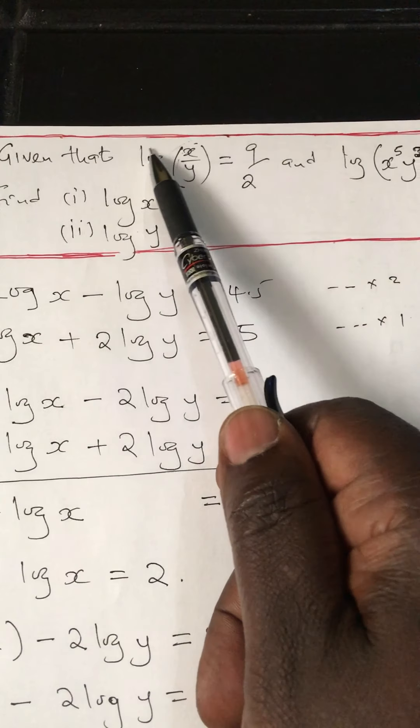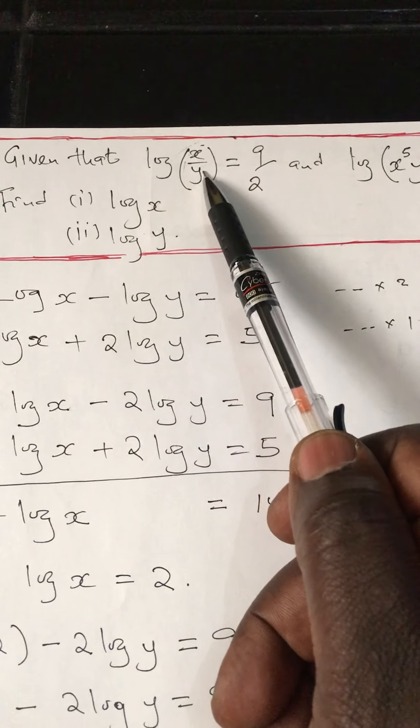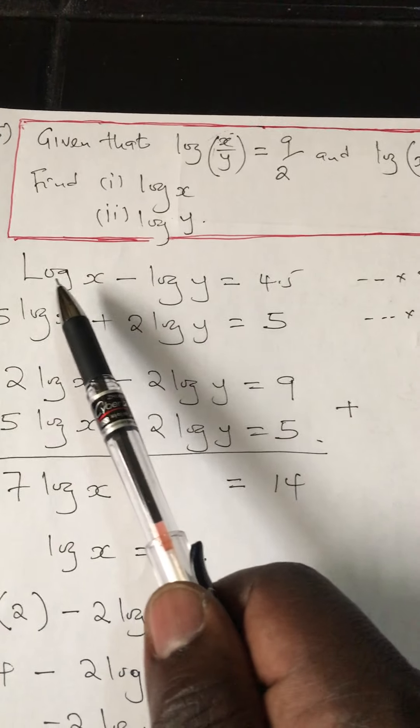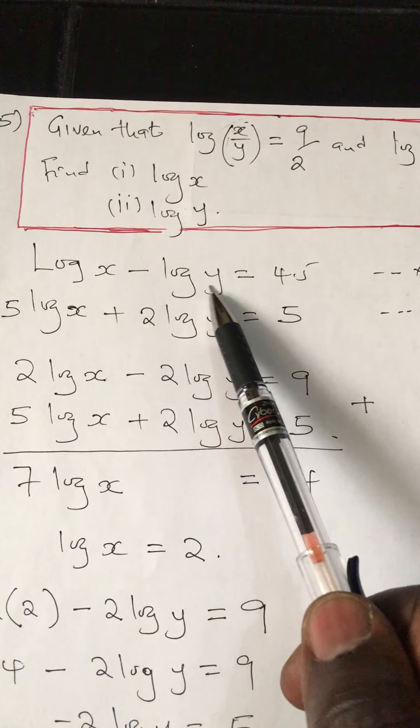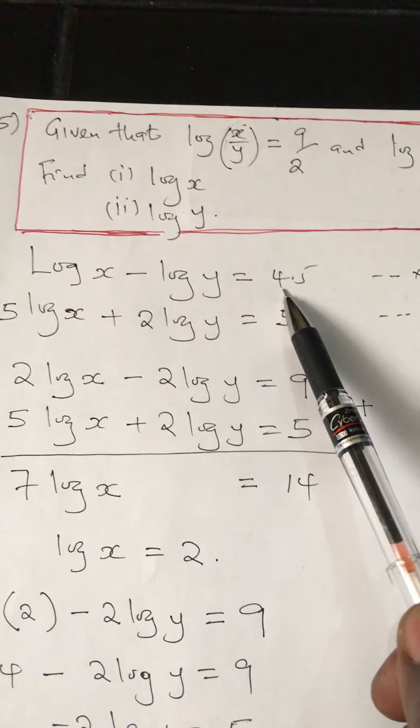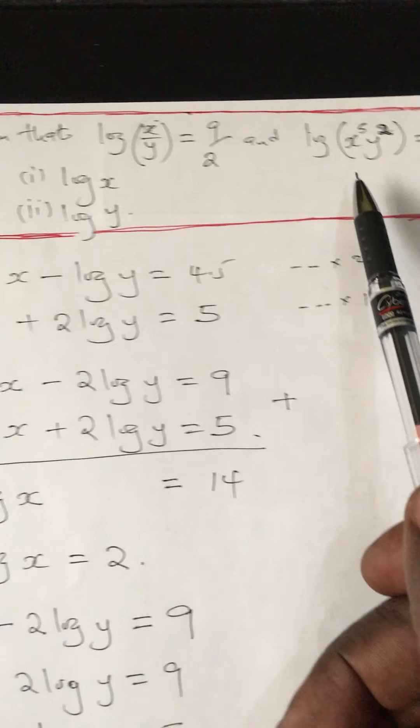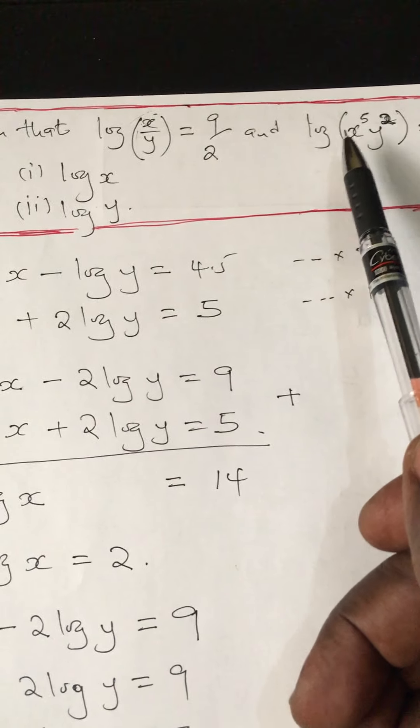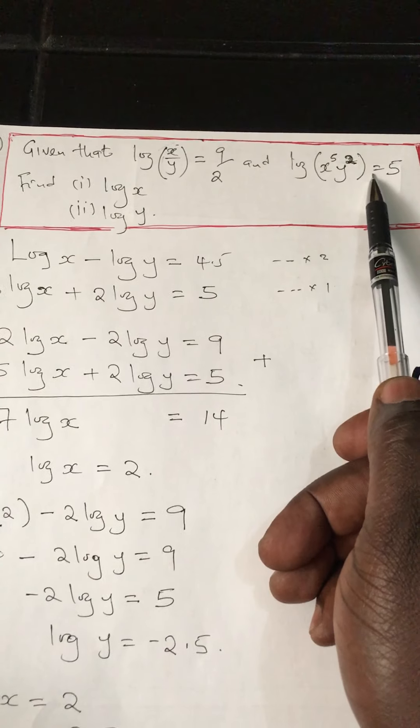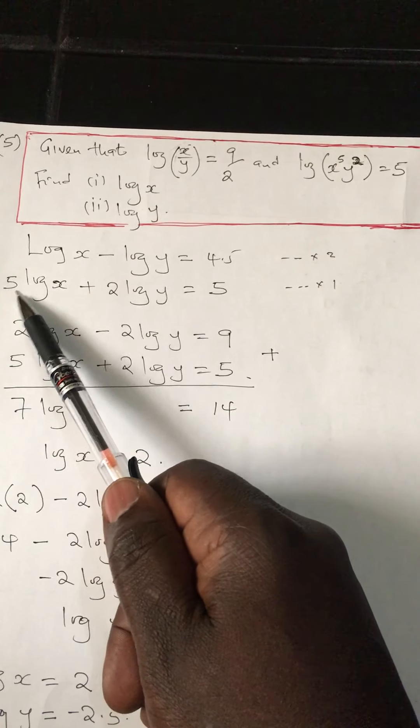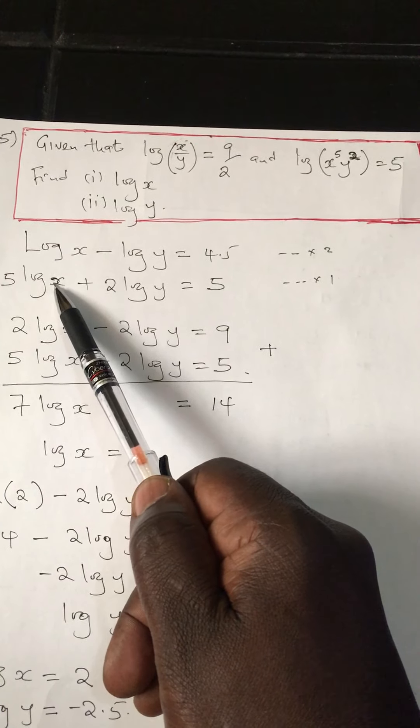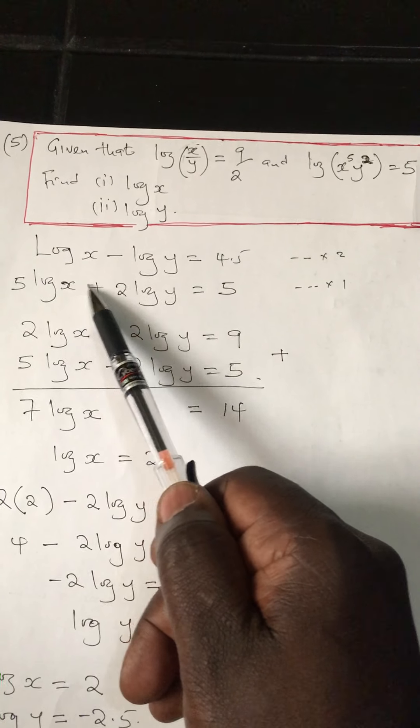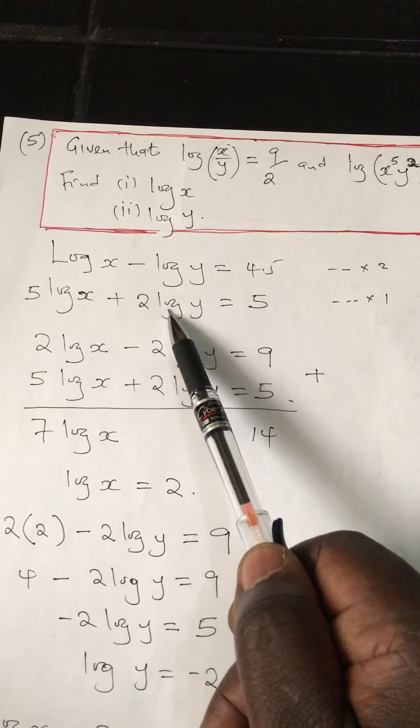The first thing I will do is write log x over y in terms of log x minus log y. So log x minus log y equals 4.5, since 9 divided by 2 is the same as 4.5. The second one has multiplication, so it becomes 5 log x plus 2 log y equals 5, because x raised to 5 in terms of logs is 5 log x, and y squared becomes 2 log y.